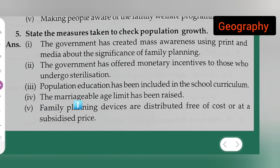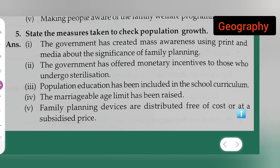The fourth point: the marriageable age limit has been raised. The fifth point: family planning devices are distributed free of cost or at a subsidized price. This is the answer to today's question. I hope you all have understood, and thanks for watching.